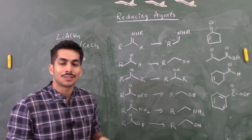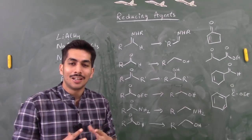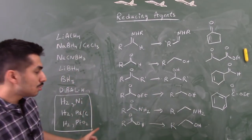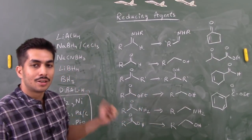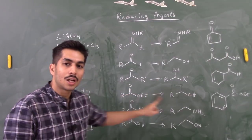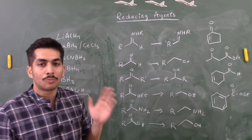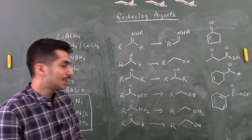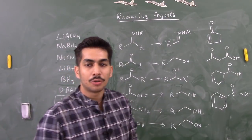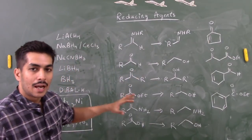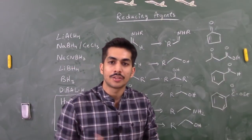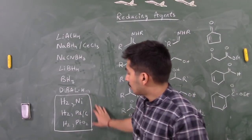BH3 is a star reagent. BH3 can reduce amides to amines and carboxylic acids to alcohols — none of the other reagents discussed can reduce carboxylic acids directly to alcohols. However, BH3 cannot reduce aldehydes, ketones, or esters to alcohols easily. The reason is that BH3 follows a different mechanism compared to hydride donors, which will be explained in a mechanistic video.